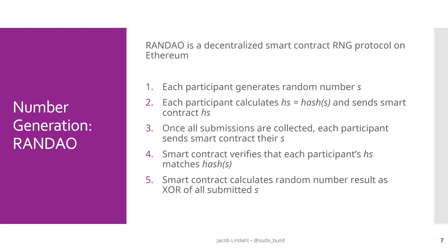Randow's actual implementation is a bit more sophisticated. For example, each participant pays a fee when they commit in step two, and that fee is refunded in step three if the hash they sent matches the hash of the number they later send in. If they are dishonest — either not sending in step three or sending something that doesn't match step two — they don't get their deposit back. This incentivizes people to be honest and not try to game the protocol.